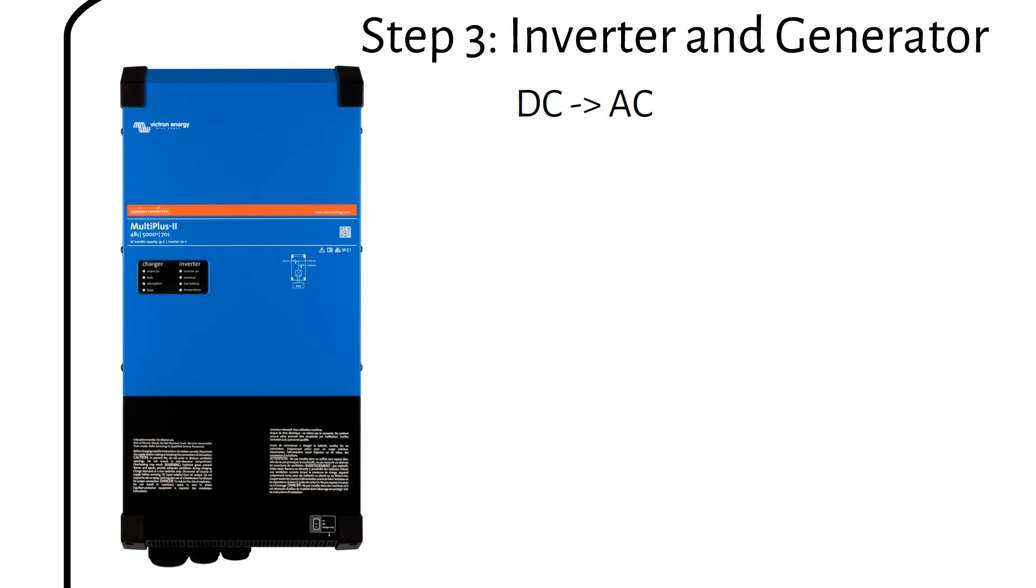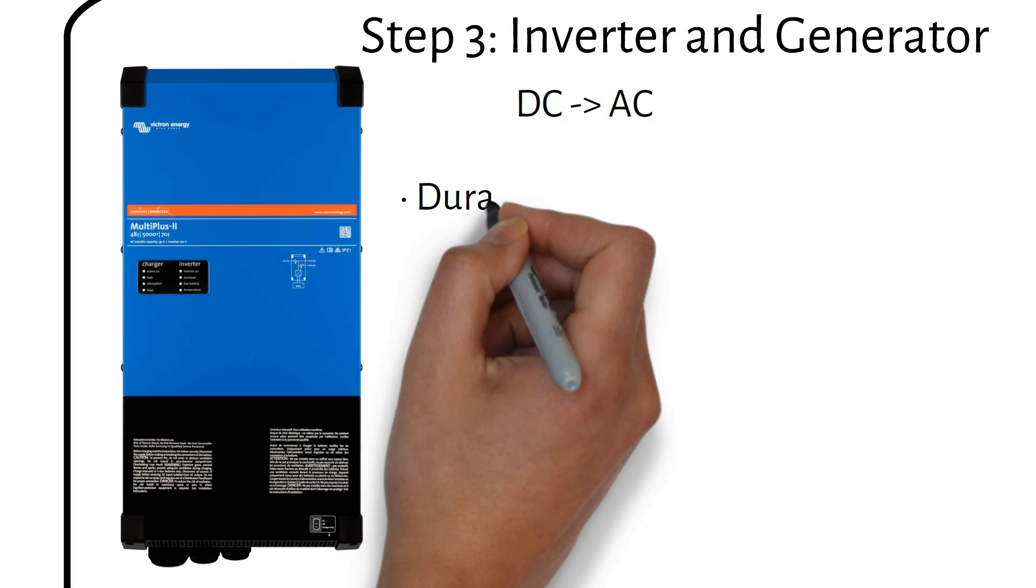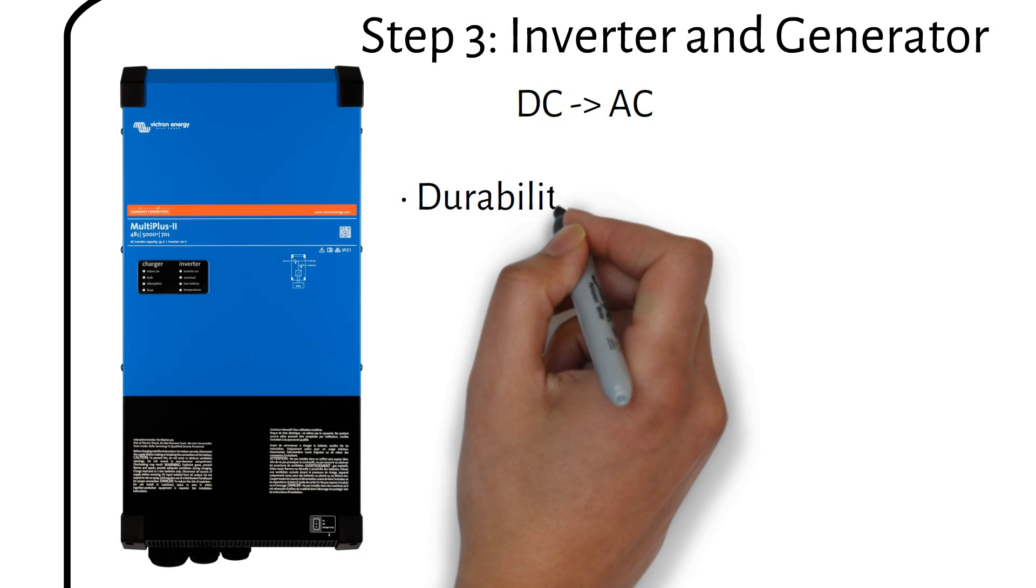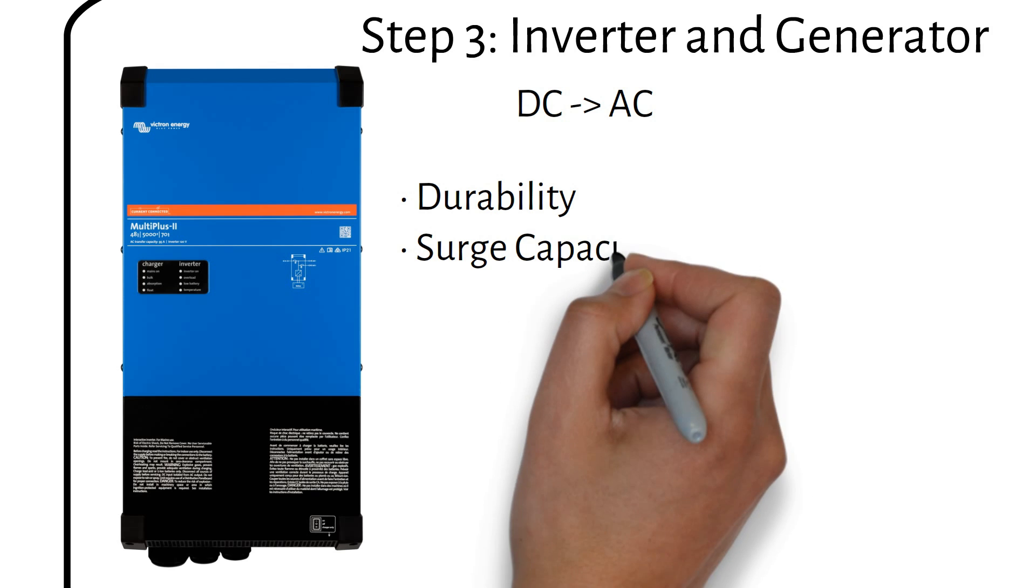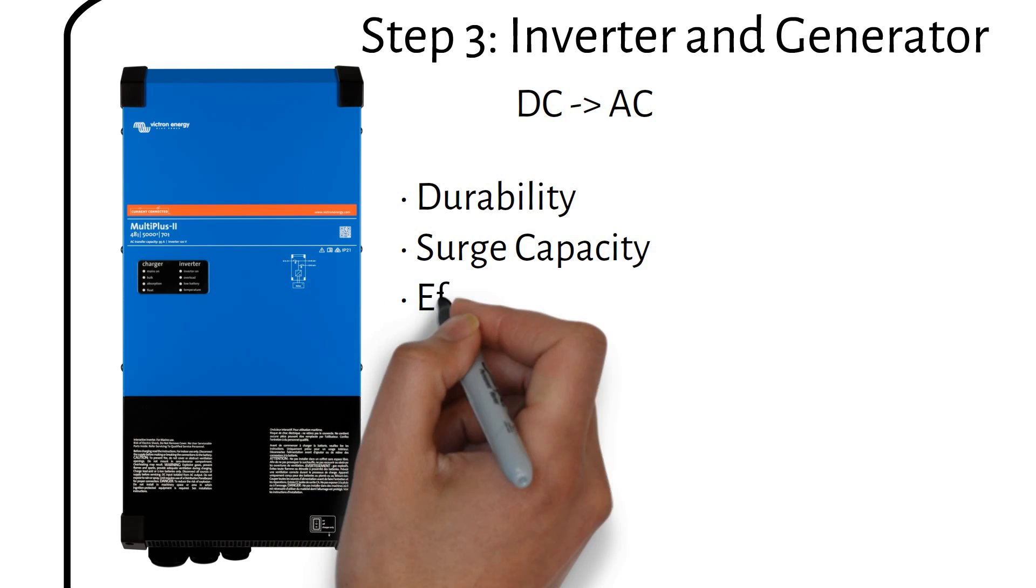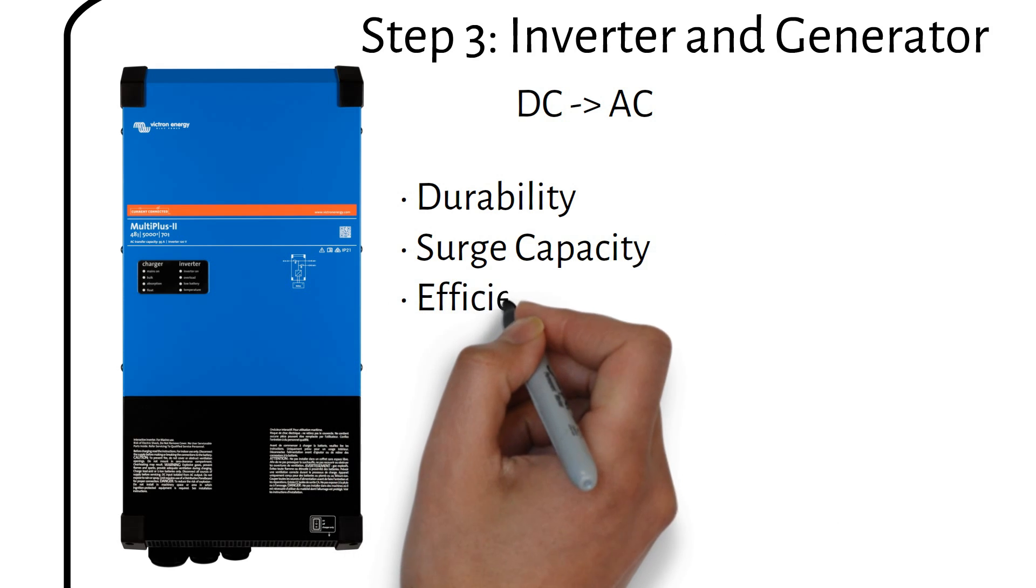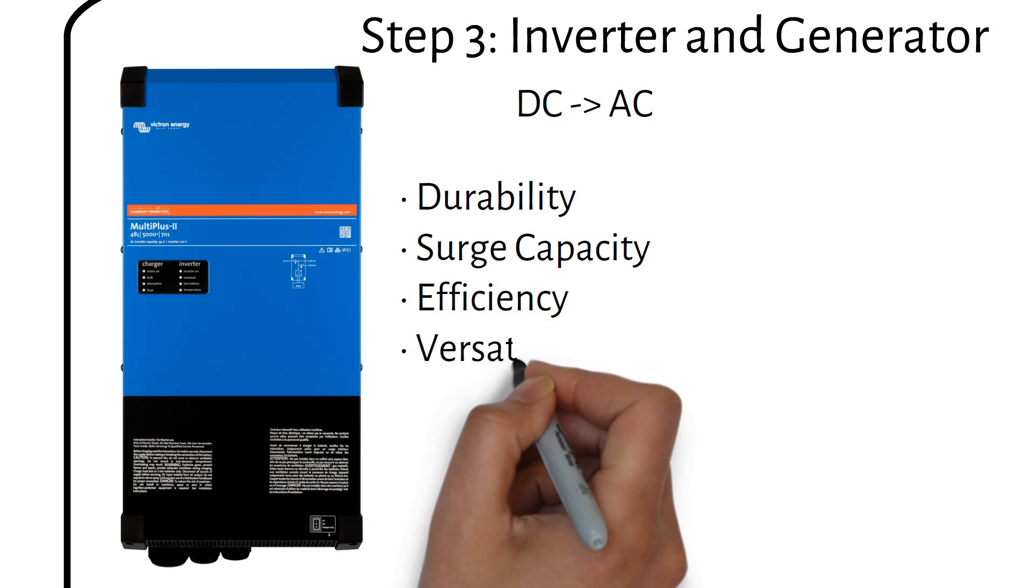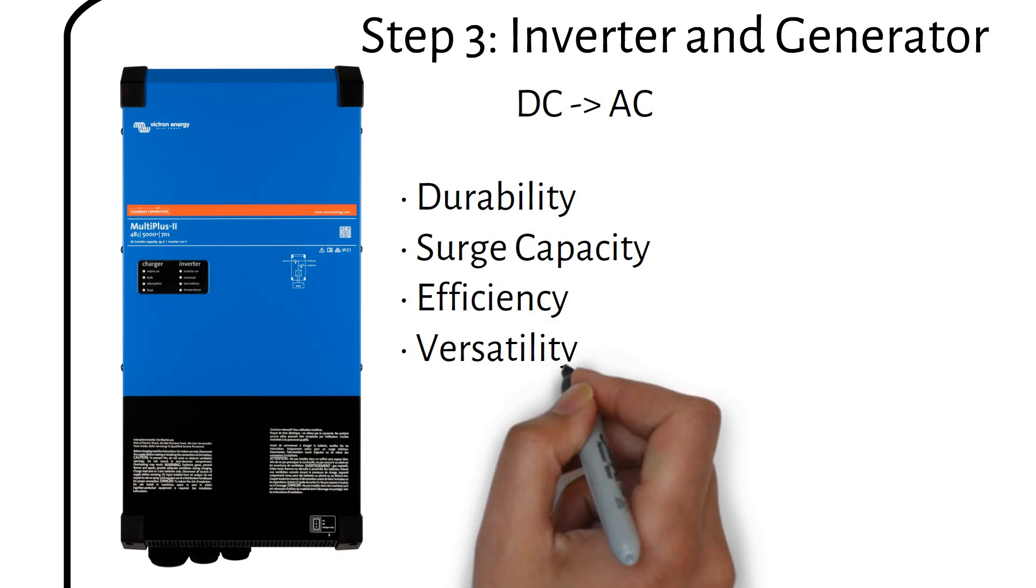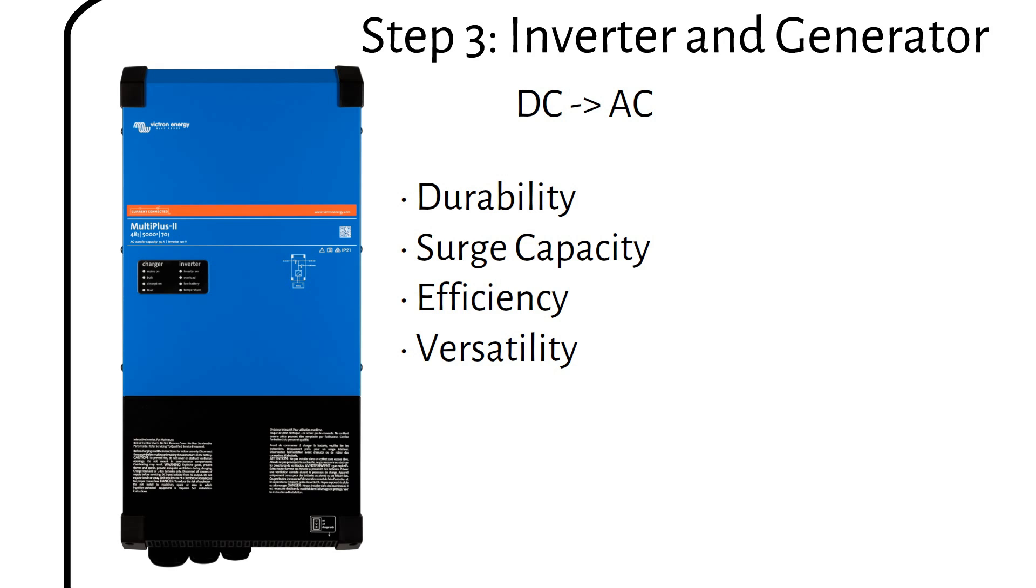Low frequency inverters tend to last longer. It can handle surge loads better, which is useful when starting appliances like refrigerators, pumps or table saws. It has a low idle power consumption of only 15W. It can work with a generator to recharge the batteries when solar power isn't enough.